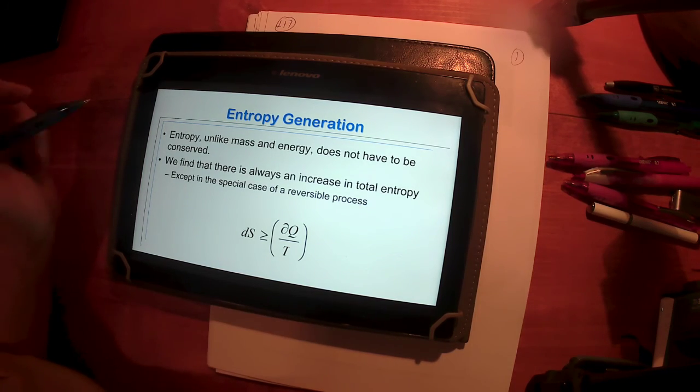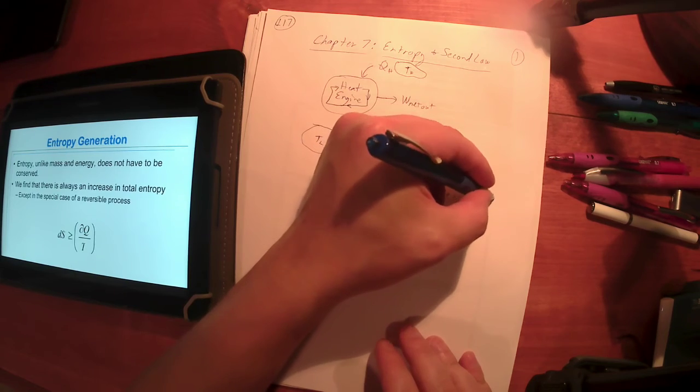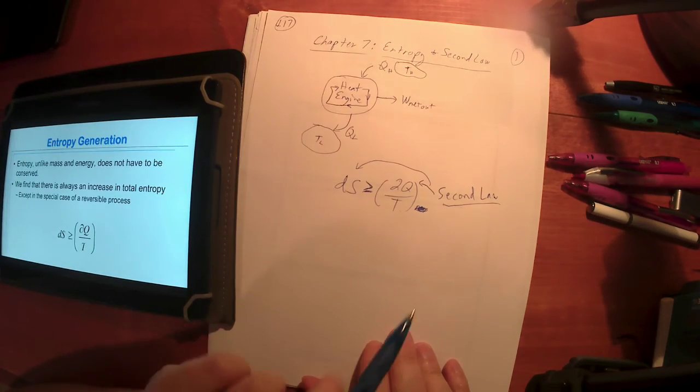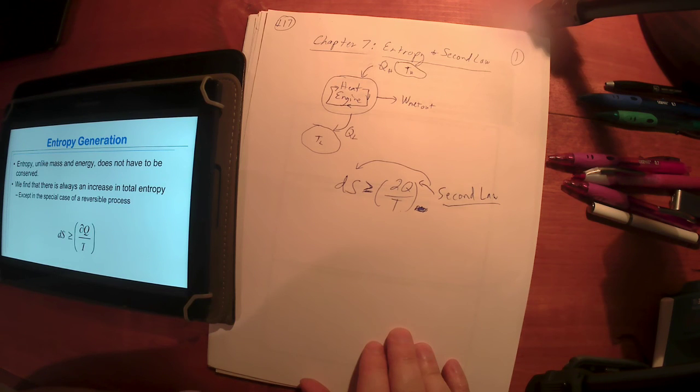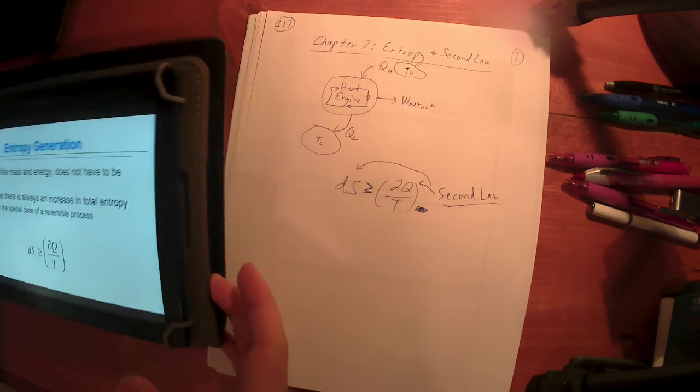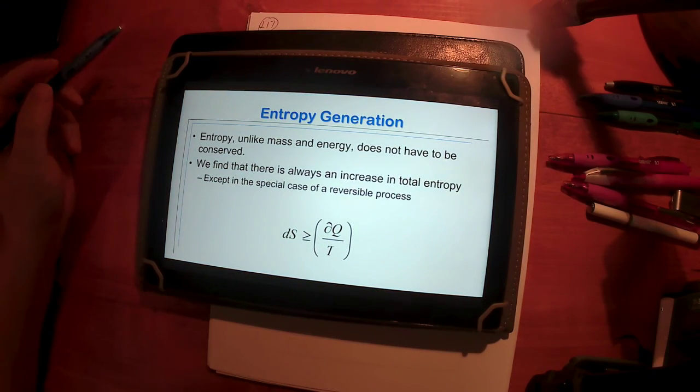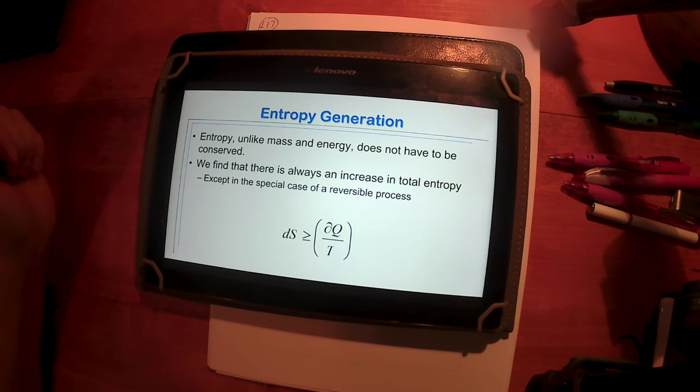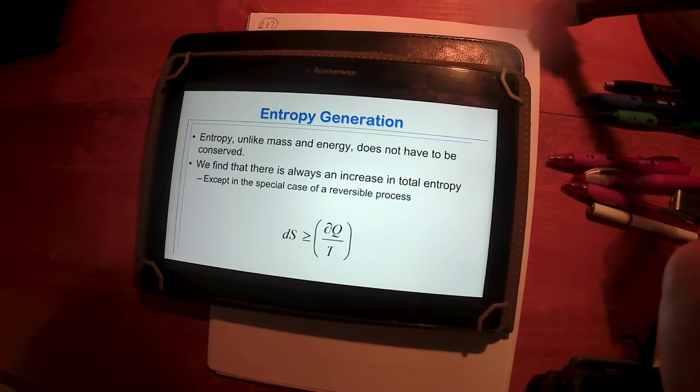All right, so again, Clausius's conclusion is that, and this is by the way, this is the second law. Congratulations, introduced now to the second law. The second law says that a change in entropy is always going to be greater than or equal to what causes the entropy change. Okay. So that entropy, unlike mass and energy, these mass and energy are conserved quantities, they are never created nor destroyed. Entropy is not like that. Entropy actually gets generated. At best, in the best case scenario, in the equal to scenario, entropy is being conserved, that's a reversible situation. In all other cases, entropy is being generated, and that's going to be our focus for this lecture today. All right, we'll pick up on the next one.